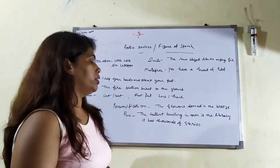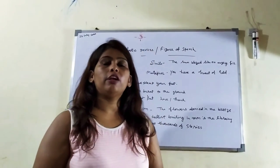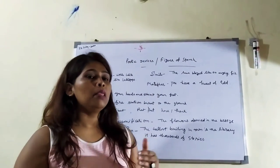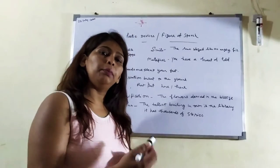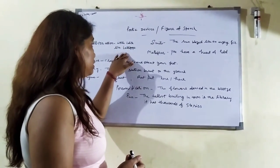First, for example, alliteration. Alliteration I have described in many poems. Alliteration, where one alphabet is repeated many times. Here is an example.